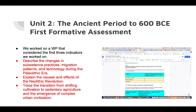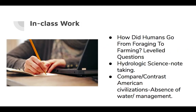As well as explaining the causes and effects of the Neolithic Revolution, and tracing the transition from shifting cultivation to sedentary agriculture and the emergence of complex urban civilization. You can see here we created at least a draft of the formative — you reviewed it, gave some feedback, and we moved forward. That will be due this coming Tuesday.